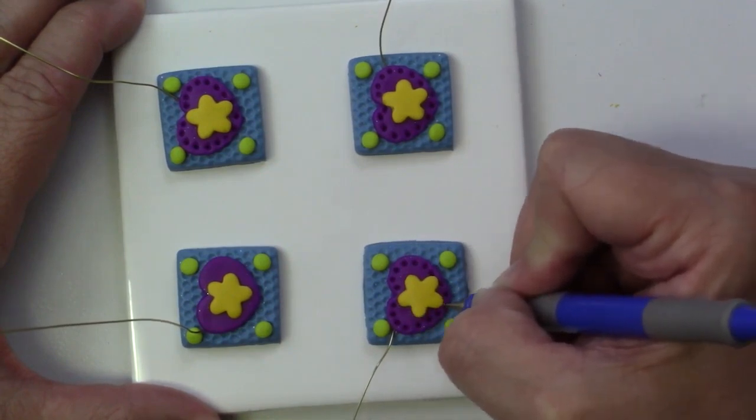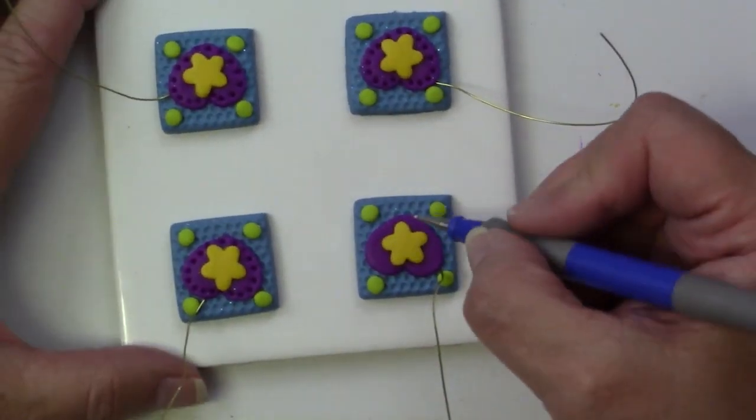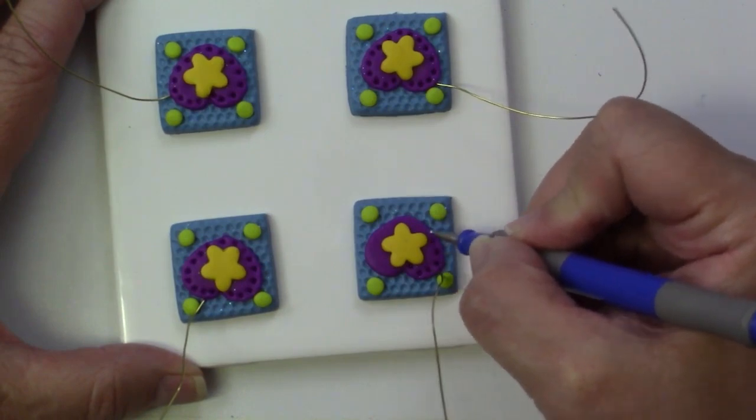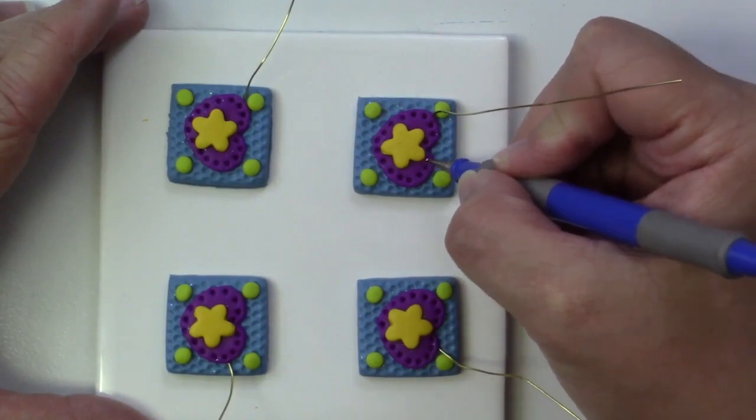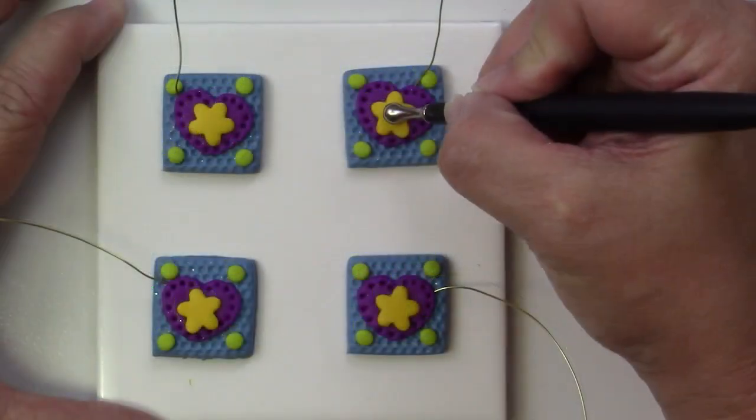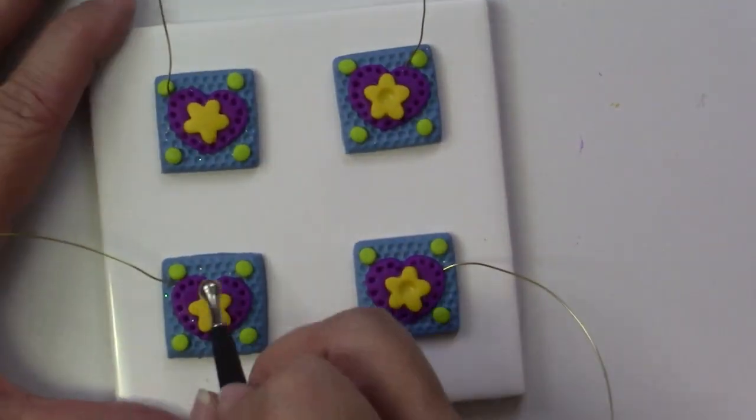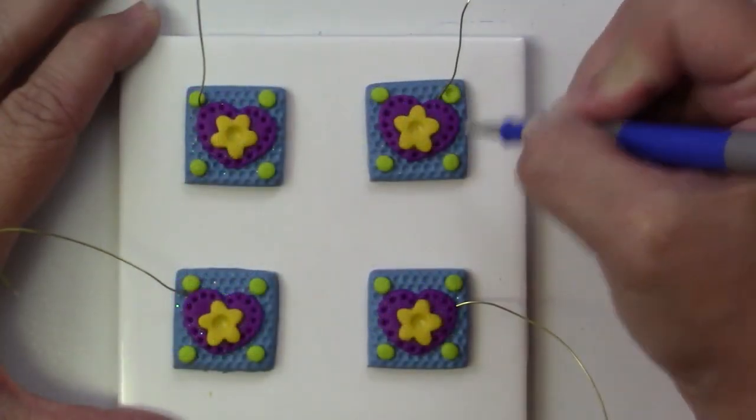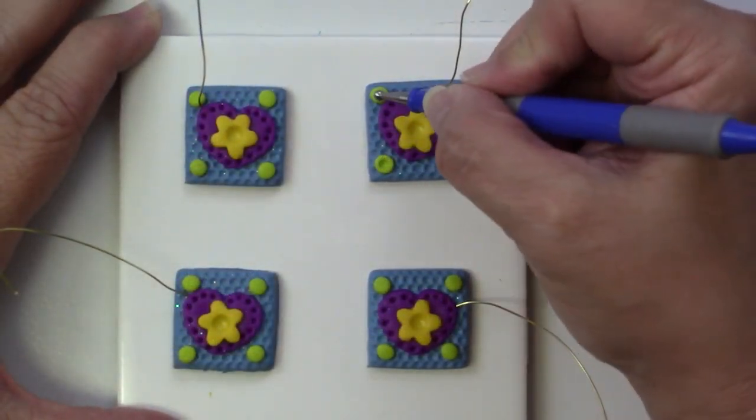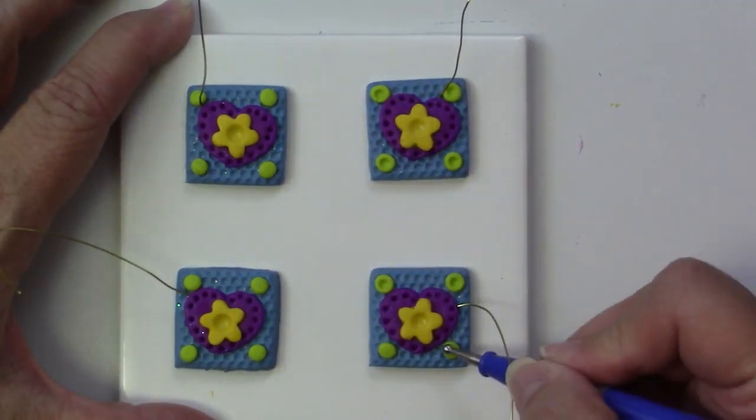And I'll do that around each one of these hearts. Now I'm using a larger ball stylus to make the center of the flowers and then I'm pressing the embossing tool into each one of the four corners.